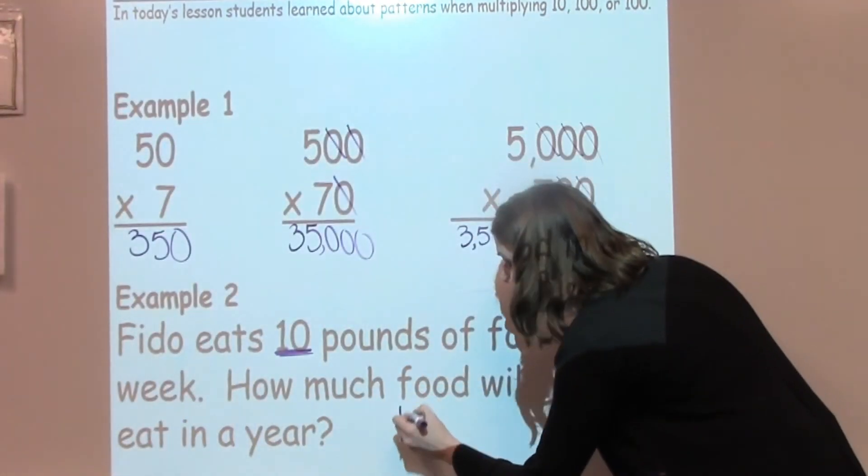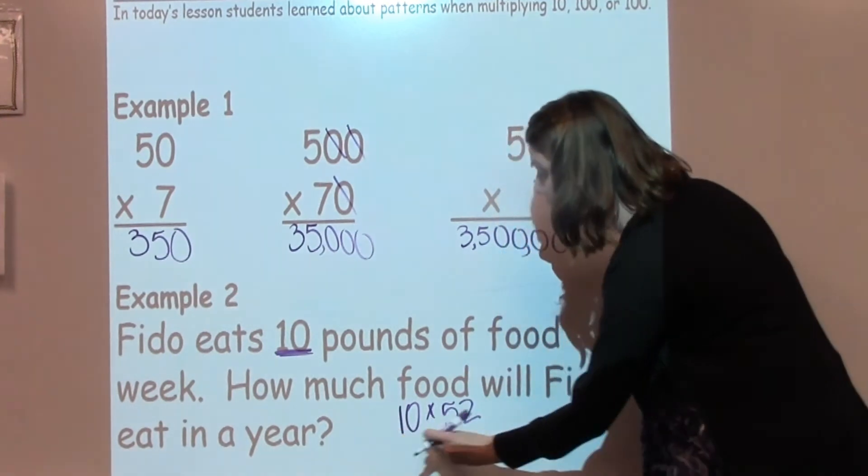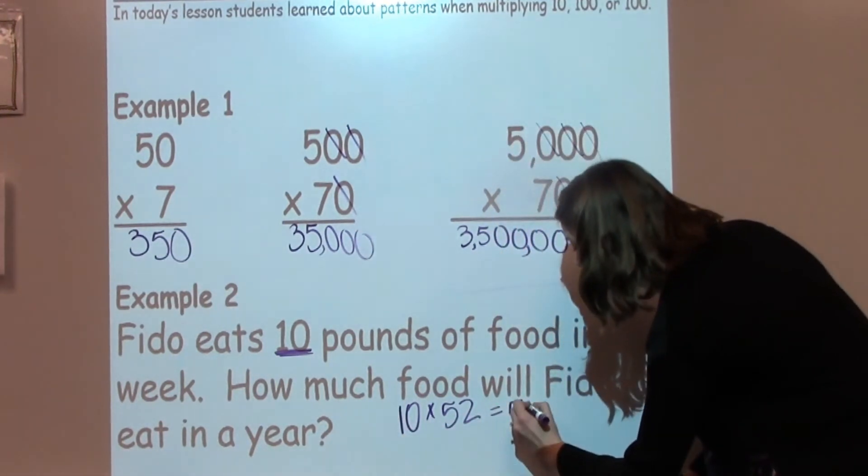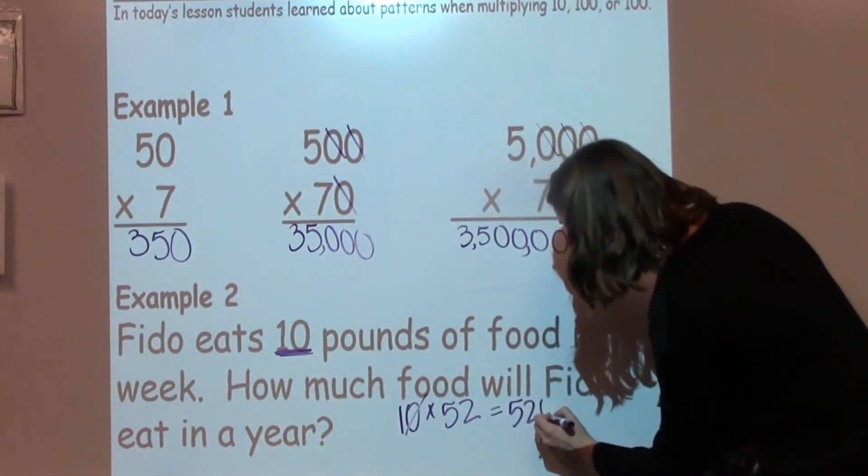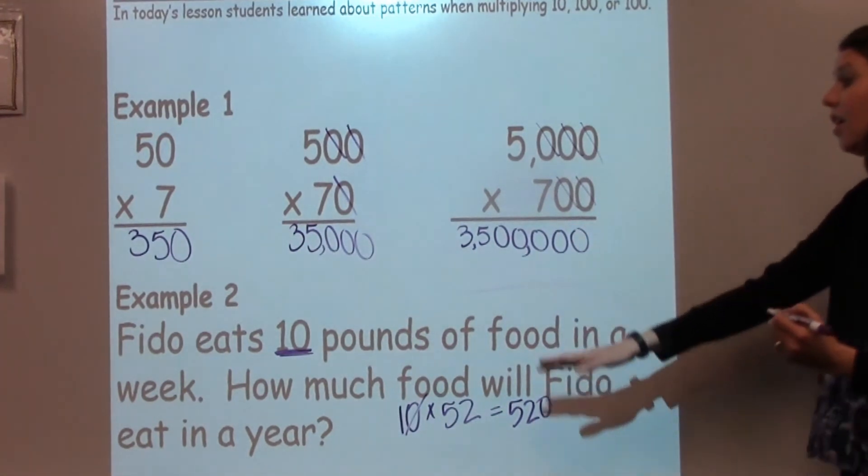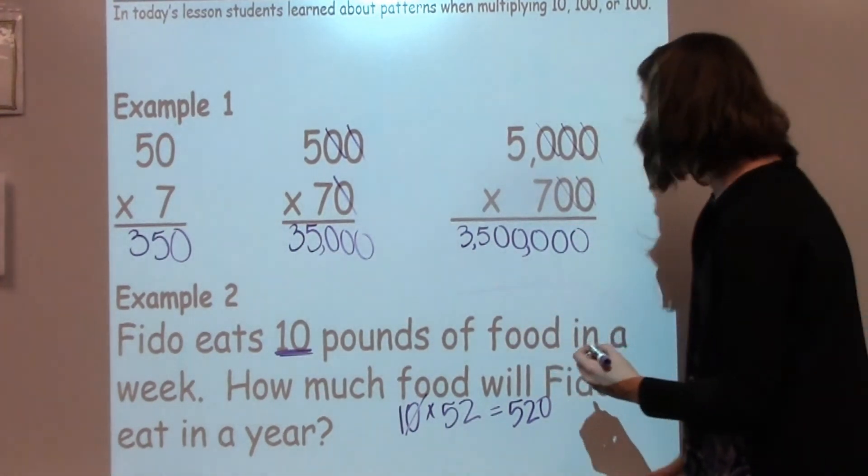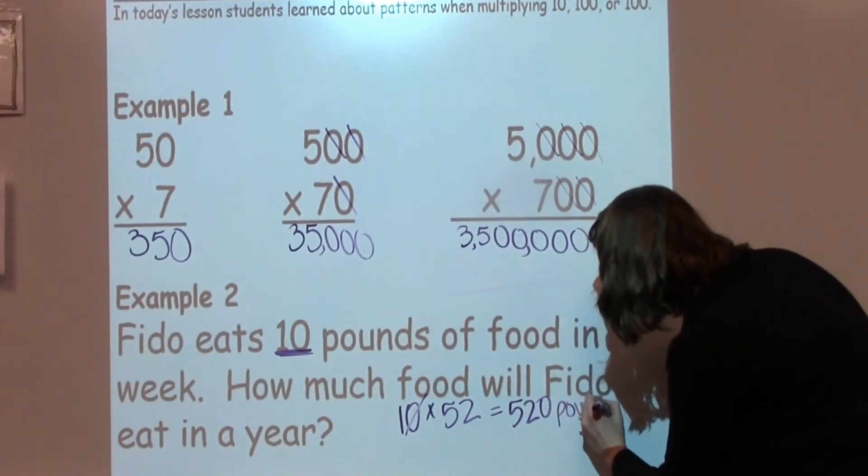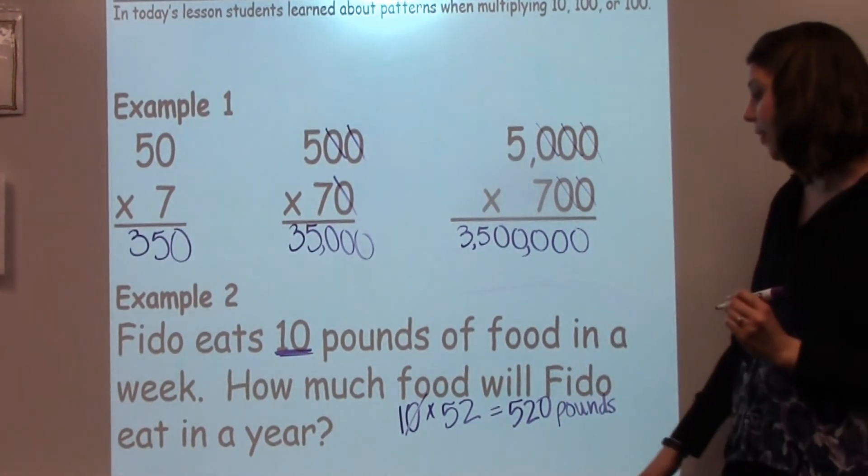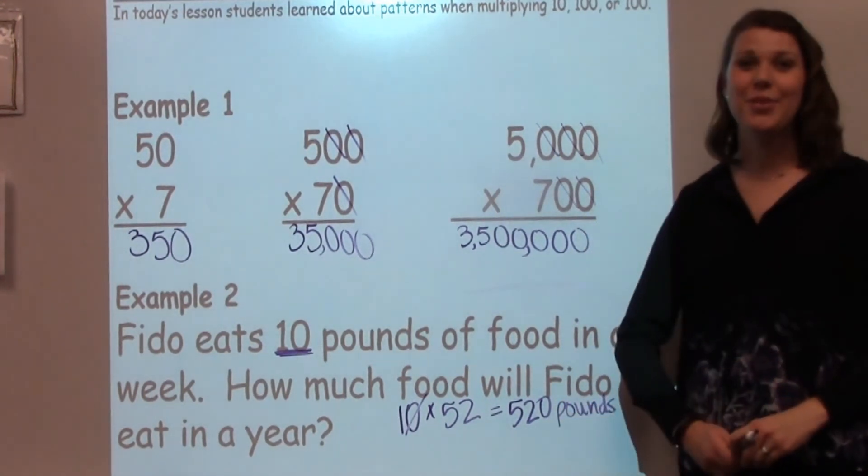So 10 times 52. Well, I know 1 times 52 is 52. I add a 0, makes it 520. For a label, I'm going to go back and I'm going to add pounds. So I know that Fido will eat 520 pounds of food in a year.